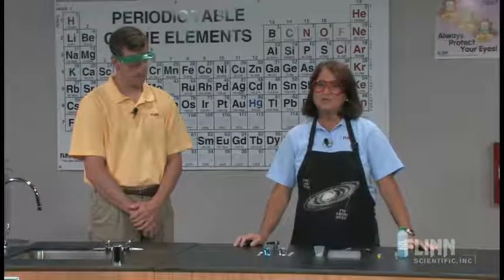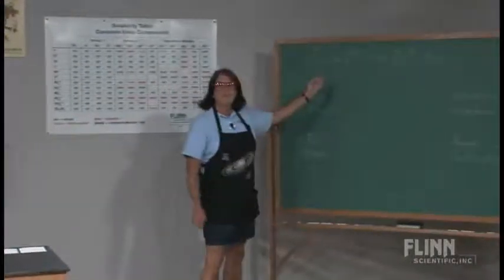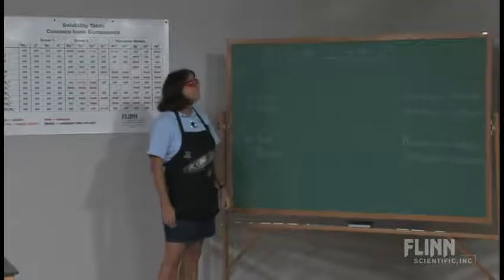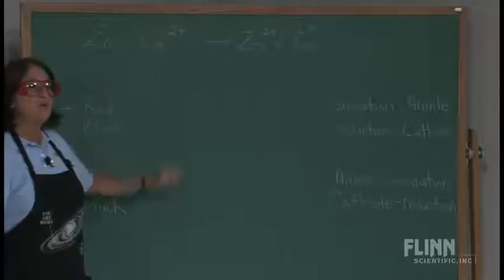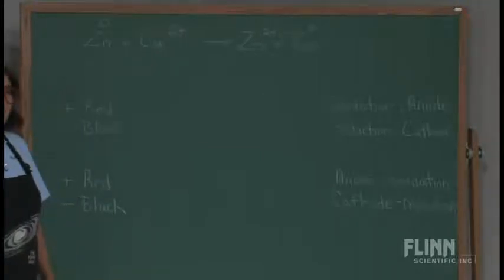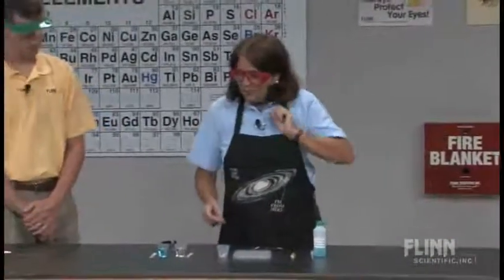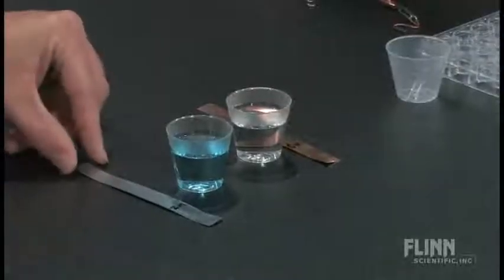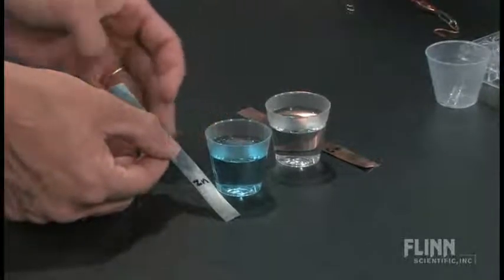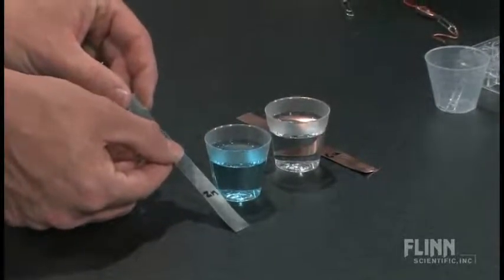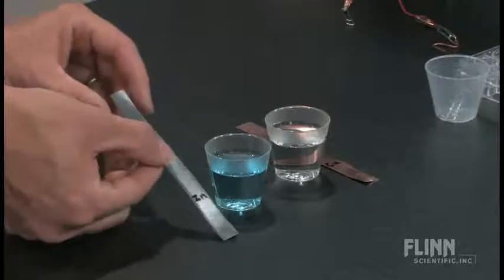We're going to move to the board real quickly and look at a very common reaction that we share with our students. We're going to look at zinc metal reacting with copper ions in solution. Here on the table, we have a strip of zinc metal and a solution of copper sulfate. Copper sulfate is soluble, so the solution will contain copper ions plus two and sulfate ions. Let's take the strip of zinc and dip it into the solution.